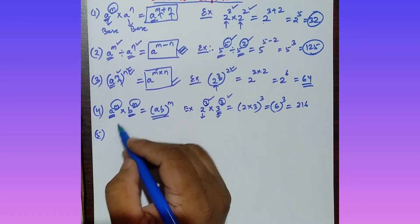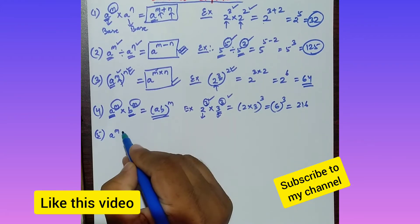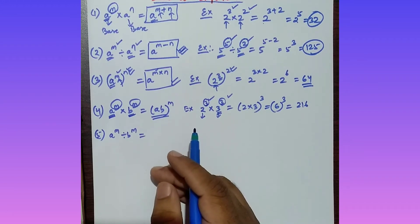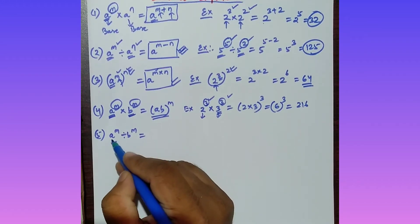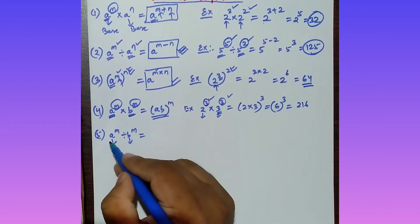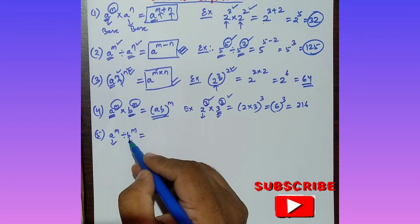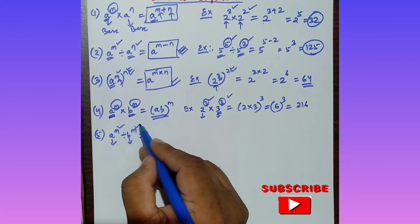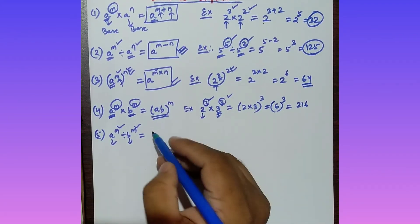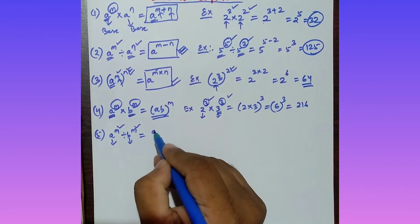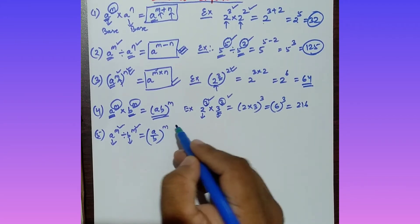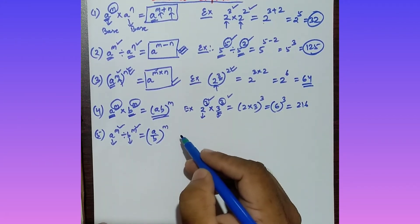The fifth property: a to the power m divided by b to the power m. The bases are different (a and b), but the powers are the same (both m). Whenever the bases are different and the powers are the same in a division, the formula is: divide base by base and keep the power — that is (a/b) whole to the power m.